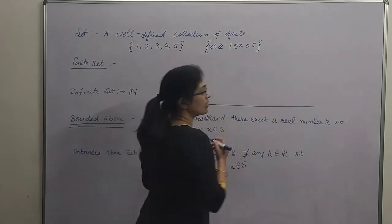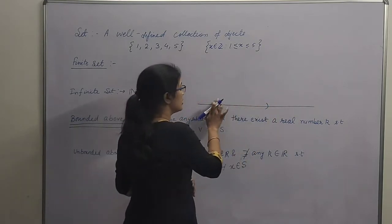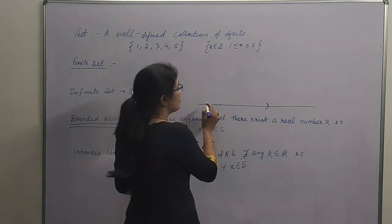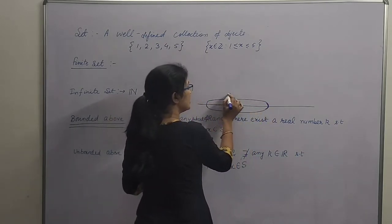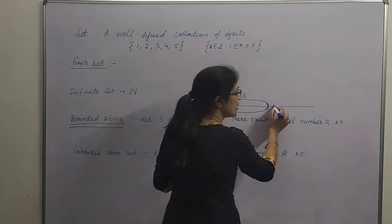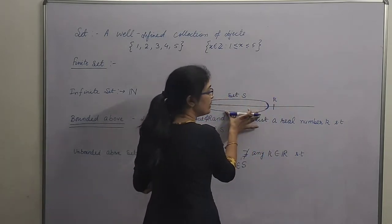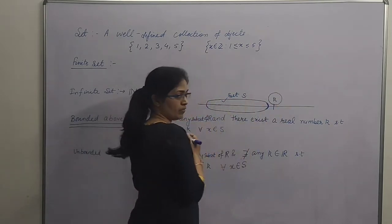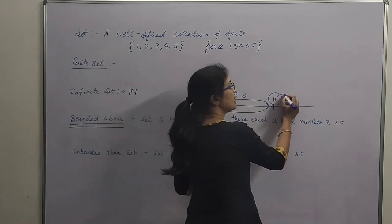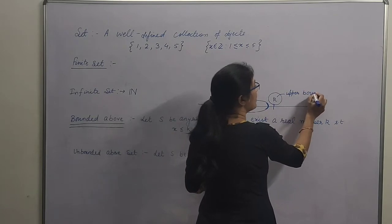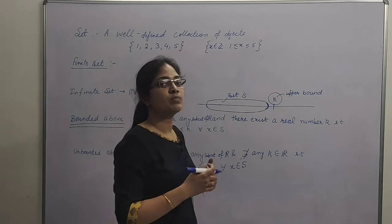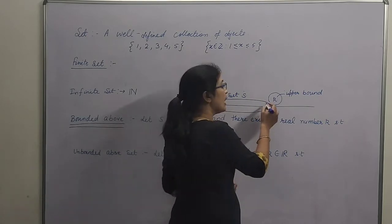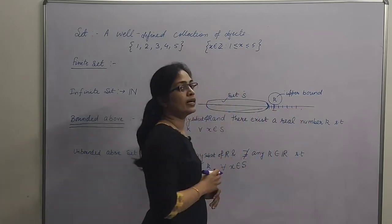Kya matlab hua hai iske? If I plot it on a real line, suppose this is your set S. Ye elements — ye wali elements sare ke sare, it's a set S. Mein ek aisa real number yahan per find out kar pa raha hoon, such that every element of this set is less than this k. Therefore, this set S is bounded above and bounded above by k. Jis number se ye bounded above hai, us number ko hum kehte hain, it is an upper bound of the set S. And the set is called bounded above by k.